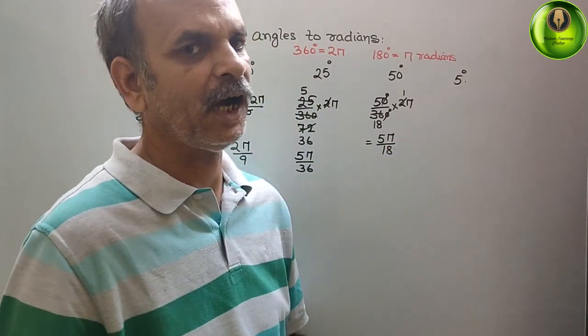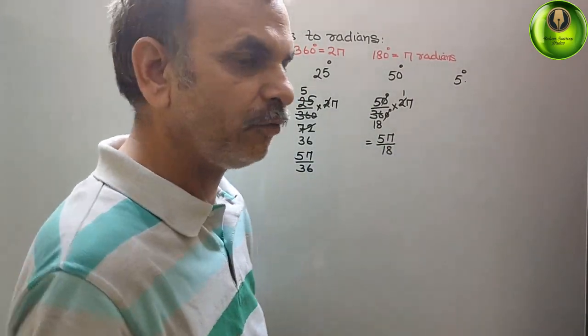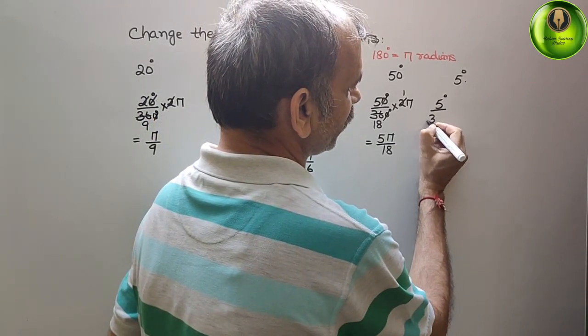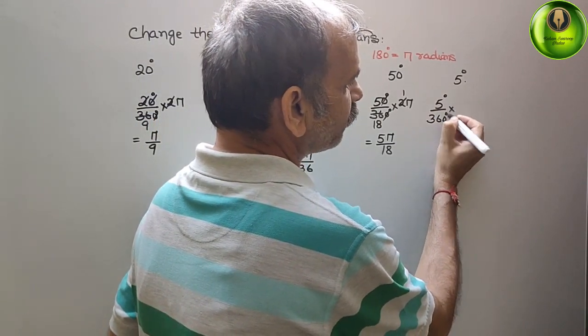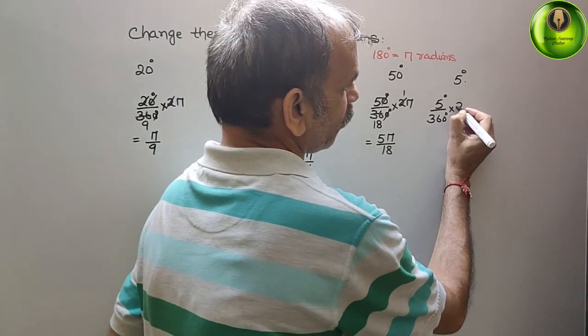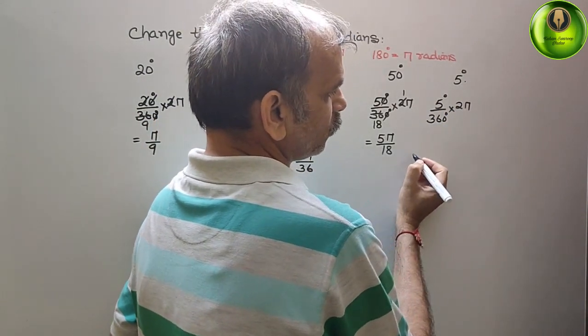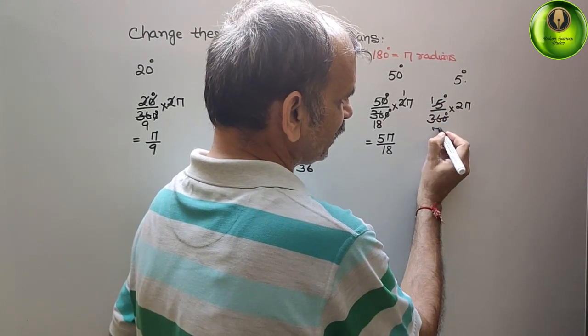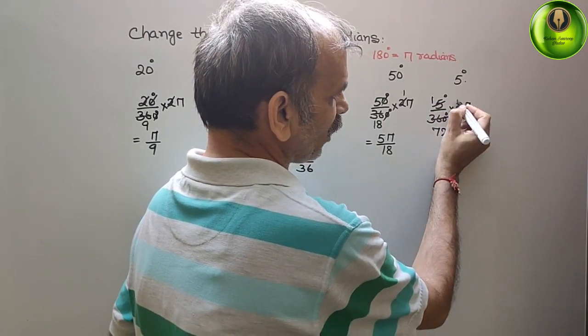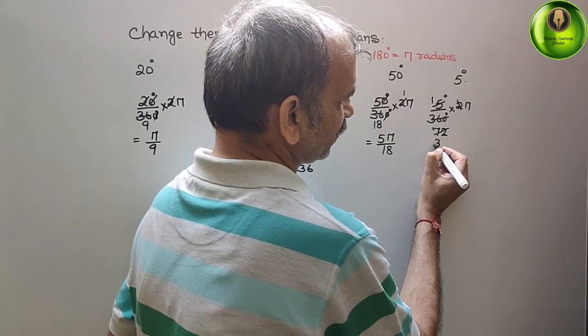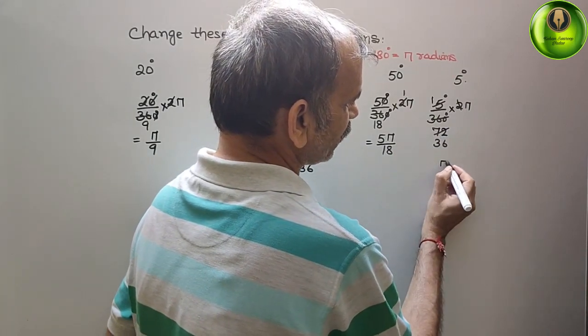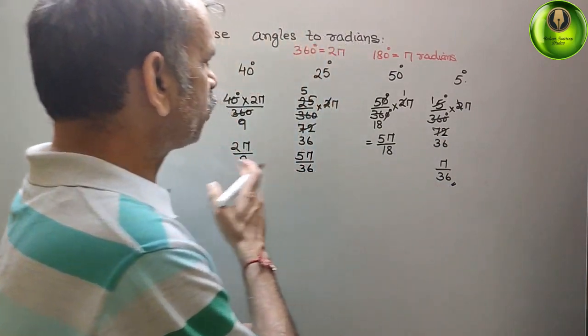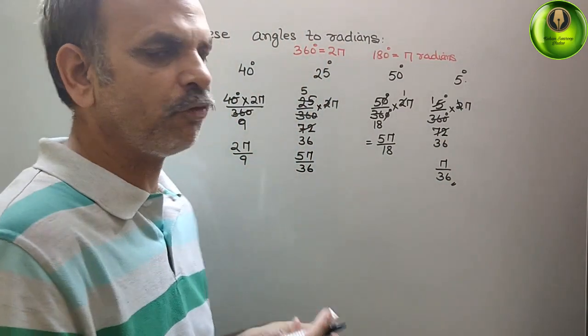Next comes your 5 degree. How much is the radians? So we can say 5 degree by 360 degree of 2π. So how much? This is 1, and this is 72. Now cut it. This is 36. That means π by 36. So like this we have to find it out. It's very easy to find.